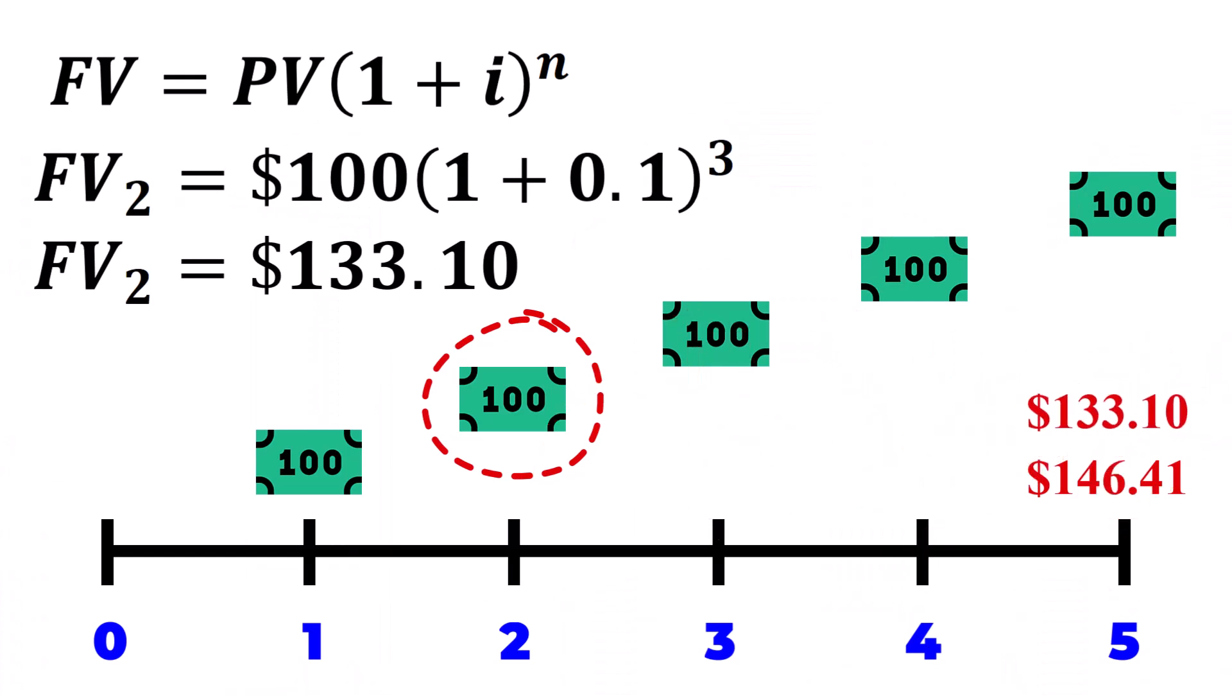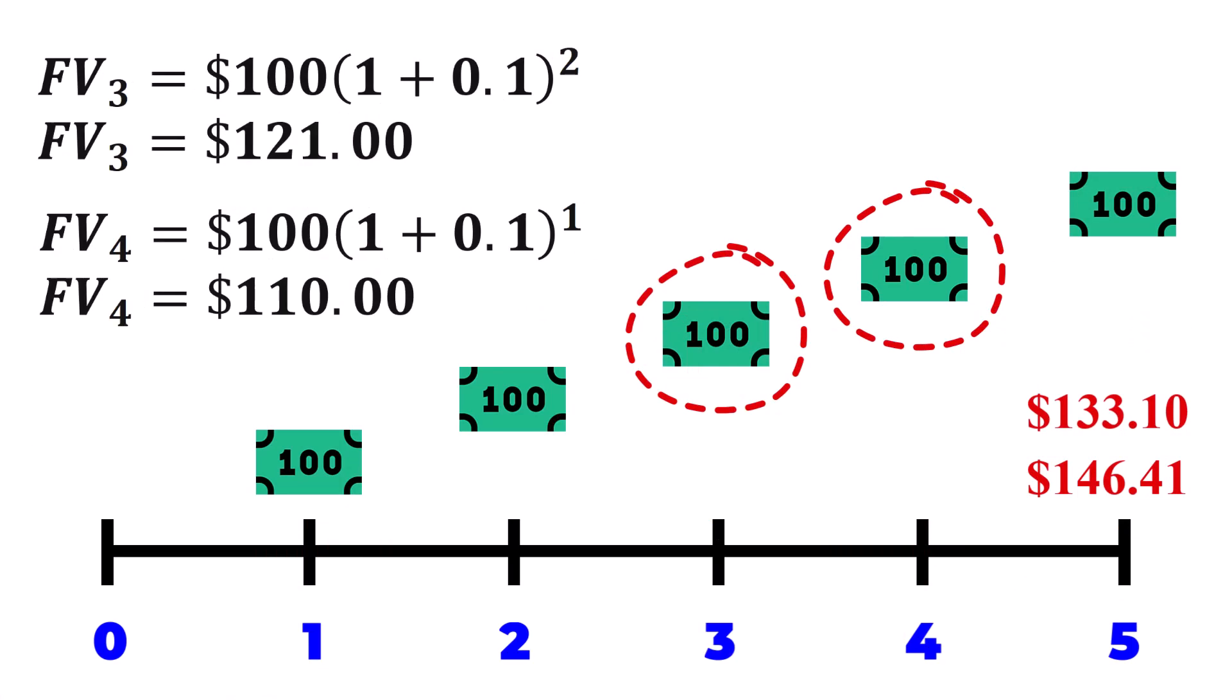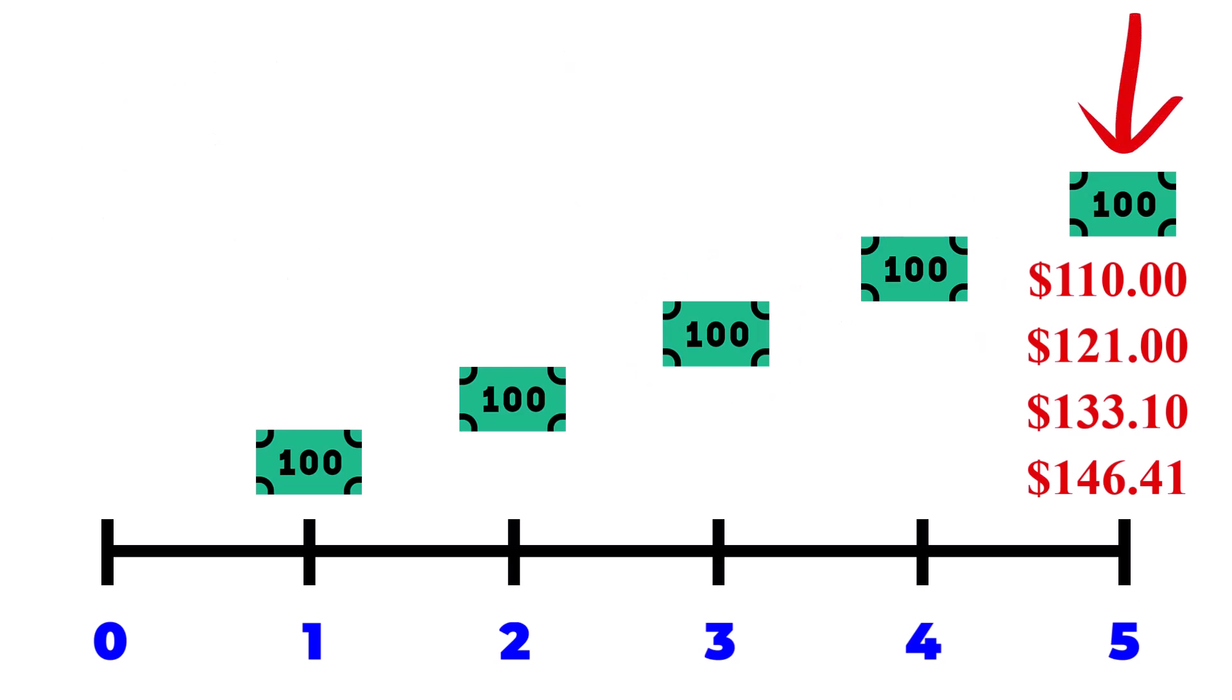The same idea will be applied to the third and fourth installment as shown. Naturally, we expect these to be less since their compounding periods decrease closer to the end. The last installment, which is added at the end of year 5, earns no interest since the annuity period ends at that point.